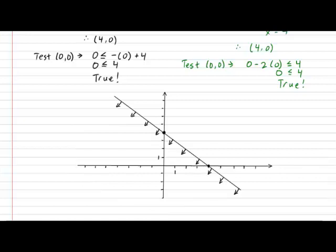Next, let's draw the line that represents our second inequality, in green. The two random points we found were (0, -2) and (4, 0). Connecting those two points produces the following line. The shaded region corresponding to that inequality is the region that contains our test point (0, 0). Instead of coloring it in, we're going to put arrows to indicate where the shaded region would have been, pointing in the direction of the region that contains (0, 0).